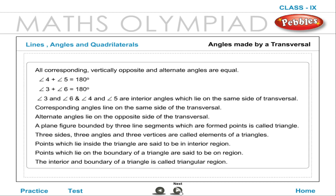Angle 4 plus angle 5 is equal to 180 degrees, and angle 3 plus angle 6 is equal to 180 degrees. Angle 3 and angle 6, and angle 4 and angle 5 are interior angles which lie on the same side of the transversal. Corresponding angles lie on the same side, while alternate angles lie on the opposite side of the transversal.